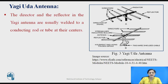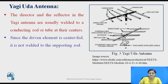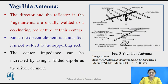An example of a parasitic array antenna is the Yagi-Uda antenna. This figure shows the Yagi-Uda antenna. You can observe 5 elements: 3 are directors, one is the driven element, and one is the reflector. The driven element is the radiator. The directors and the reflector are usually welded to a conducting rod or tube. Since the driven element is center-fed, it is not welded to the supporting rod. The center impedance can be increased by using a folded dipole antenna as the driven element, as shown in the second figure.